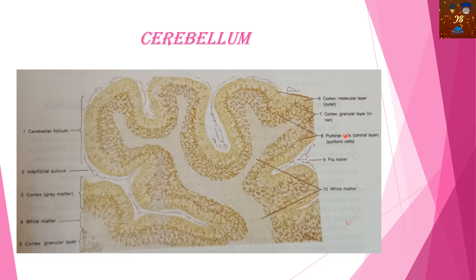The gray matter contains different types of cells. You can see the molecular layer, which contains molecular cells, and the granular layer is also present. These dark spots are the Purkinje cells, which are considered the main cells present in the cerebellum. Cerebellum is identified by these folds containing different layers — the molecular layer, granular layer, and Purkinje cell layer of different colors.